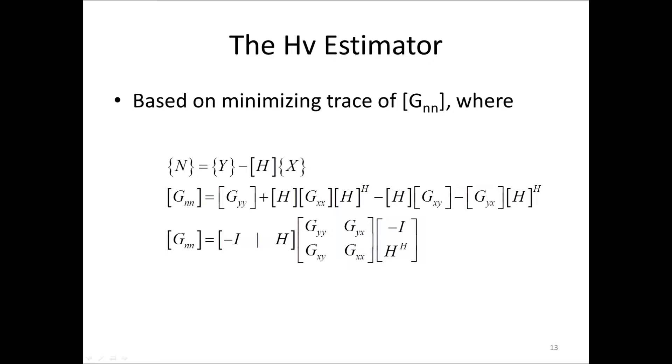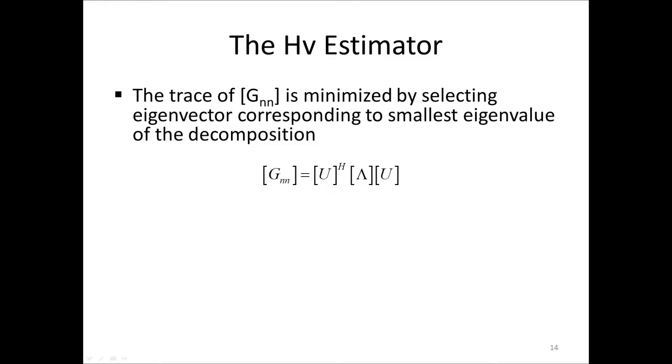The method to formulate the Hv estimator is to define an error vector as the difference between the output vector y and H times x. We call this vector n here. This error vector contains all extraneous noise, and you should not confuse it with the output noise for which we previously also used the letter n. Next, we formulate the cross-spectrum matrix G sub nn. By some advanced linear algebra, the solution that minimizes the trace of G sub nn can be shown to be found by taking the smallest eigenvalue of the eigenvalue decomposition of G nn.